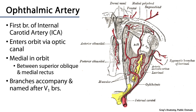The ophthalmic artery is the primary supplier of blood to the orbit, eye, and surrounding environments. The ophthalmic artery is the very first branch off of the internal carotid artery as it exits the cavernous sinus. It enters the orbit lateral to the optic nerve through the optic canal.